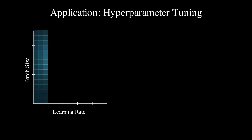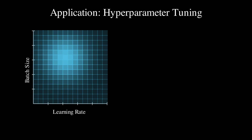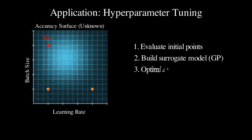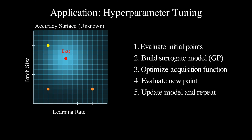This makes Bayesian optimization perfect for hyperparameter tuning in machine learning. Imagine each drilling operation as training a neural network with a specific learning rate and batch size. Since training is computationally expensive, we want to find the best hyperparameters with as few training runs as possible. By treating the model accuracy as our oil content and the hyperparameters as our location, we can apply the exact same Bayesian optimization process: start with a few initial training runs, build our surrogate model, find the hyperparameter setting that maximizes our acquisition function, evaluate the new point, update the model, and repeat. What makes this approach so powerful is that it adapts to the landscape it's exploring, and the acquisition function naturally guides us to promising regions while avoiding wasting evaluations in poor areas.